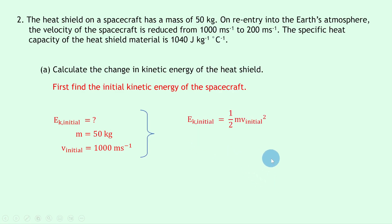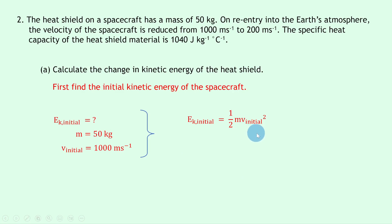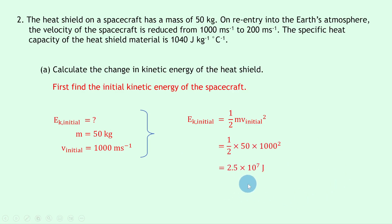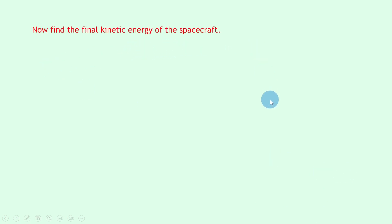For the initial kinetic energy, the mass m = 50 kilograms and the initial velocity v_initial = 1000 meters per second. Writing down our equation for kinetic energy: EK = ½mv², using the subscript 'initial' for both kinetic energy and velocity. So EK_initial = ½ × mv_initial². Substituting in the numbers: ½ × 50 × 1000² gives an answer of 2.5×10⁷ joules.